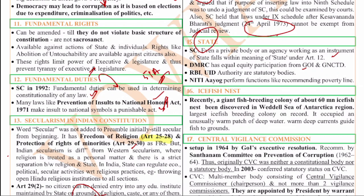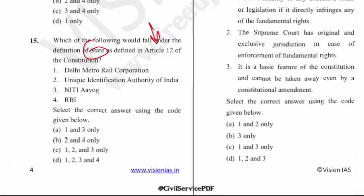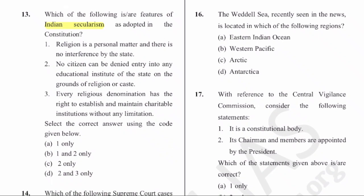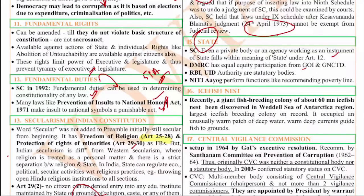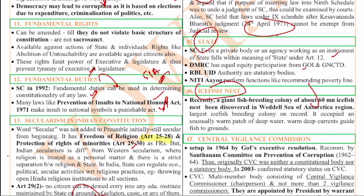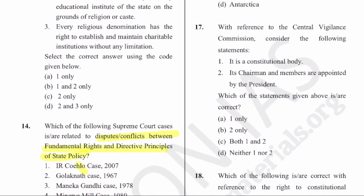The next question involves the Weddell Sea icefish nest, which was in the news. The question is asked indirectly about the Weddell Sea. The Weddell Sea is in the Antarctic region, which has a fish breeding colony of about 60 million icefish. It was recently discovered and that is why it was in the news.